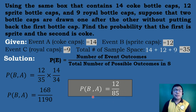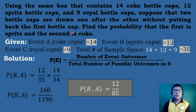Therefore, the probability that the first drawn bottle cup is Sprite and the second is Coke without replacement is equal to 12 over 85.